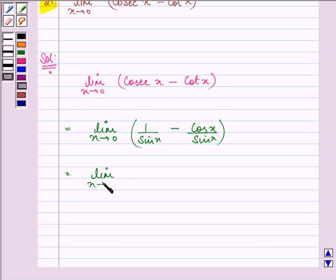Further, we have limit x approaches 0, taking sin x common, we have in the numerator 1 minus cos x.